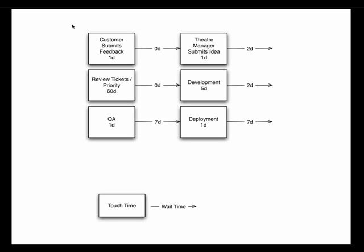This is a value stream map I did at a presentation in Dallas for a company that does software for movie theaters. It shows a couple of interesting things. 'Review tickets priority' — that probably should be aligned. But it seems like wait time — 60 days. By doing a value stream map, we can see we have this 60-day wait time on reviewing prioritized tickets, and maybe we can eliminate some of that time.